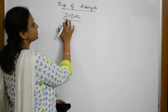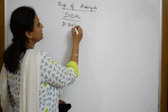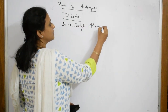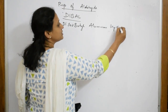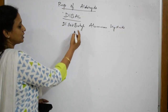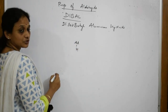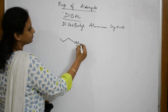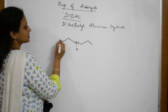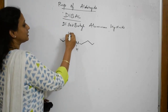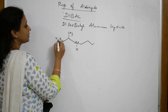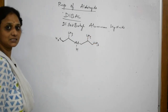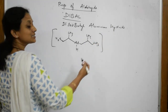What is the full form and structure of DIBAL? D stands for Di, I stands for Iso, B stands for Butyl, A stands for Aluminium, and AL stands for Aluminium Hydride — Di-Iso-Butyl-Aluminium Hydride. The structure has aluminium in the centre with a hydrogen and isobutyl groups on both sides with methyl branches. This is your DIBAL structure, which acts as a reducing agent.